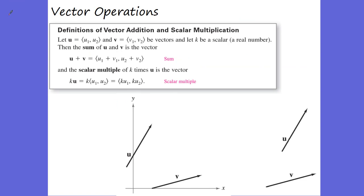Now we have different vector operations. We can add vectors together and multiply by scalars. If we multiply by 2, it multiplies the X by 2 and the Y by 2. If you multiply by 3, it multiplies X and Y by 3. If you multiply by one half, it multiplies X and Y by half, and it makes your vector smaller.